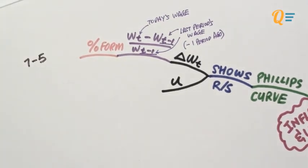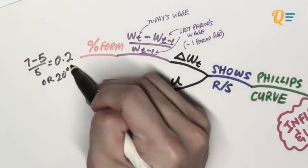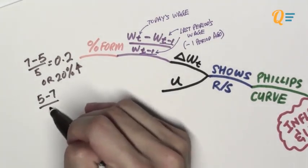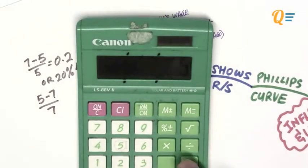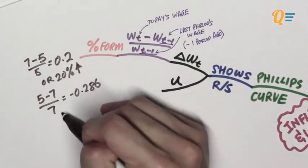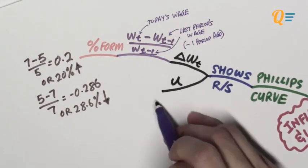Let's use a numerical example. If my wage last period was 5 and it increased to 7, then I would have a 20% increase in my nominal wage. And if in the next period my nominal wage falls back to 5, so 5 minus 7 divided by 7 gives me the percentage decrease, which would be about 0.286 — that's a 28.6% decrease in my nominal wage. That is how we calculate the rate of change in the nominal wage.